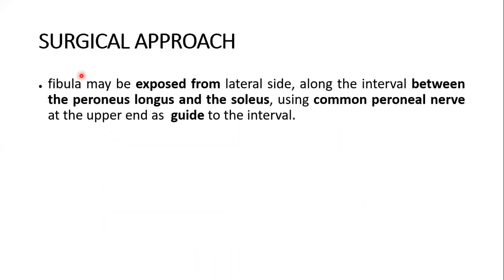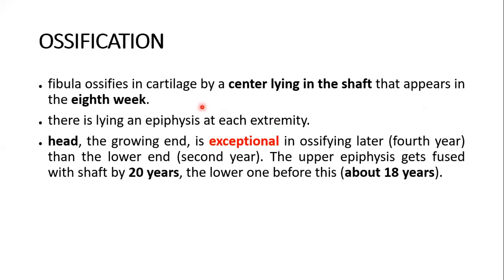For the surgical approach, the fibula may be exposed from the lateral side along the interval between peroneus longus and soleus, using the common peroneal nerve at the upper end as a guide to the interval. Regarding ossification, the fibula does not obey the law of ossification. It ossifies in cartilage by a center in the shaft appearing in the eighth week. There is an epiphysis at each extremity. The growing end — the head — is exceptional in ossifying later, in the fourth year, than the lower end, which ossifies in the second year. The upper epiphysis fuses with the shaft by 20 years and the lower one before this at about 18 years, which is against the law of ossification.